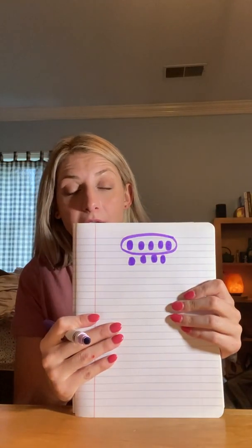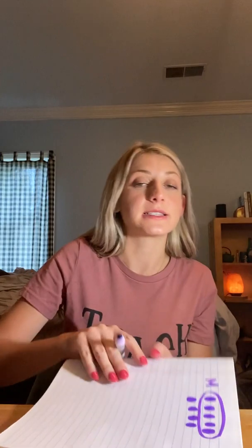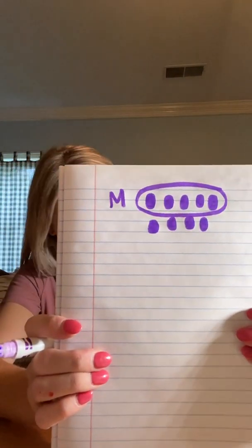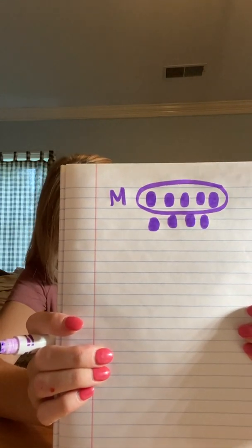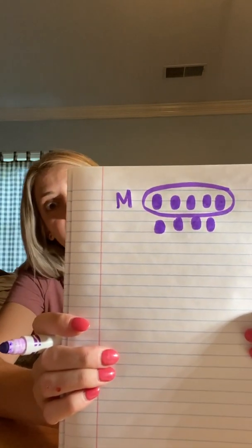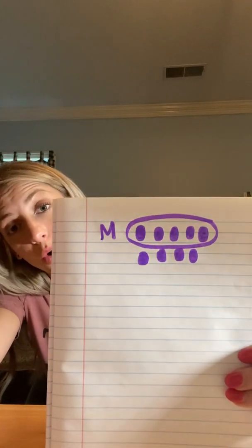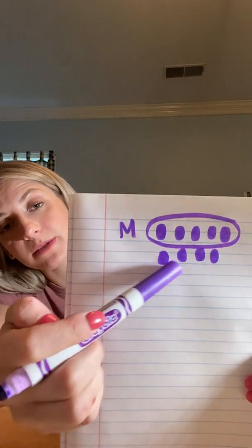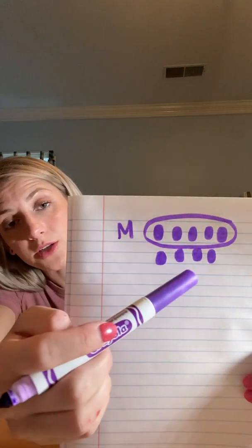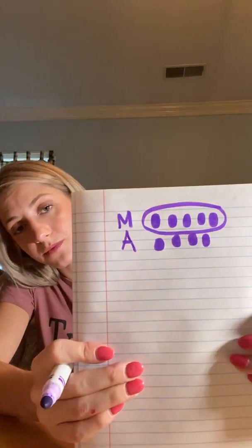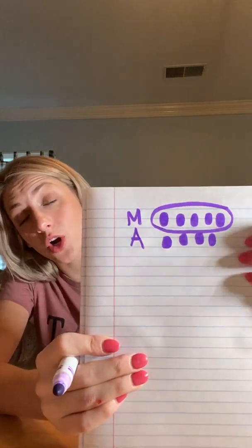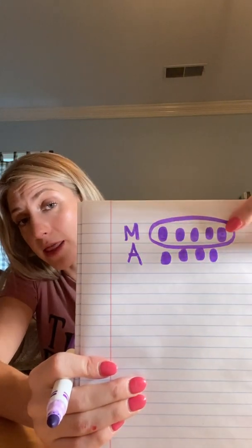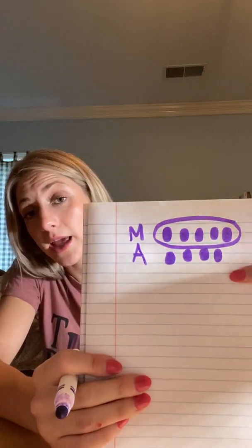Raden received nine stickers. He received five in the morning, so I'm going to circle five stickers and put an M next to them to show those are the stickers Raden got in the morning. Now I have to figure out how many stickers did Raden get in the afternoon. He got nine in total — we're not adding any more, these are all the stickers he got. We know he got five in the morning, so these must be the stickers he got in the afternoon: one, two, three, four. I'm going to label those A for afternoon. Our drawing clearly shows the stickers Raden got in the morning and in the afternoon, and we can see how many he got in total.